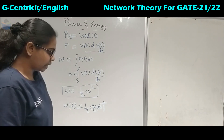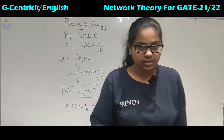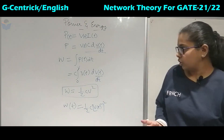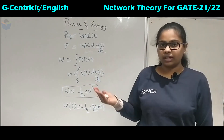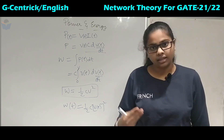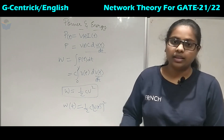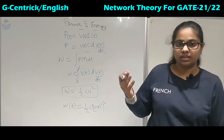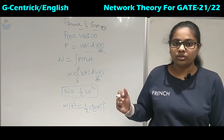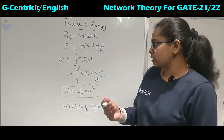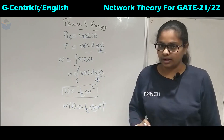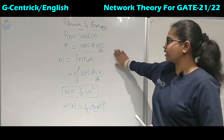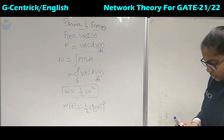The current that flows through the capacitor is called displacement current. In a conductor, current flowing is called conducting current; there is also conventional current which flows in vacuum tubes. These are some of the types of current.